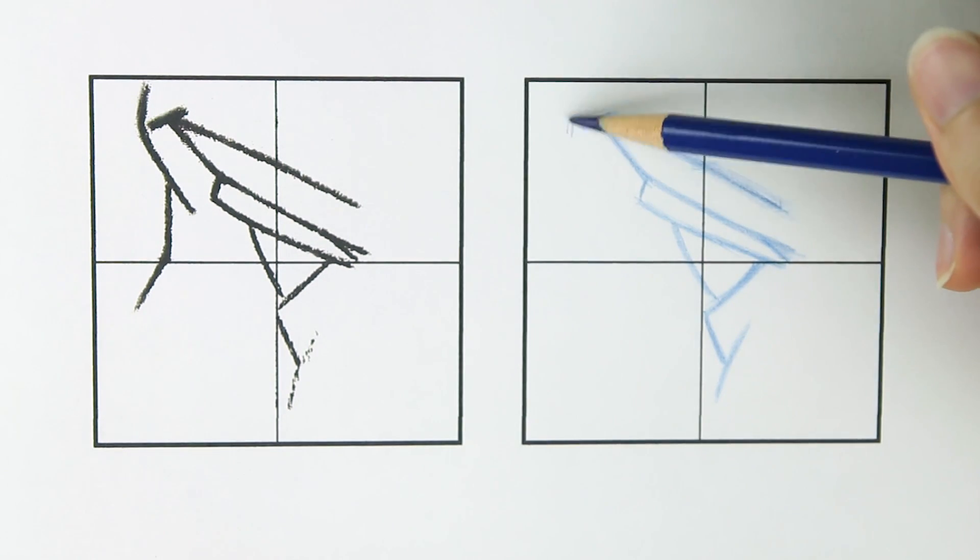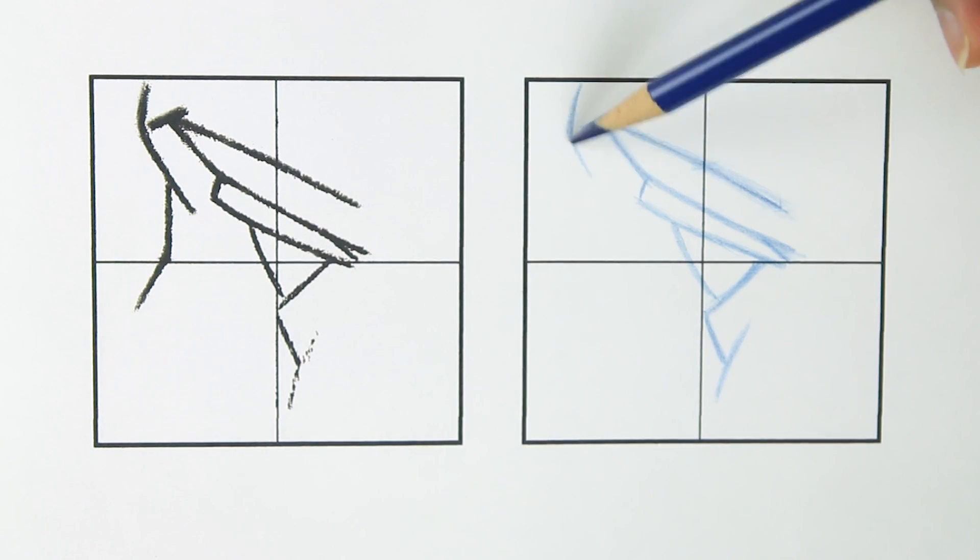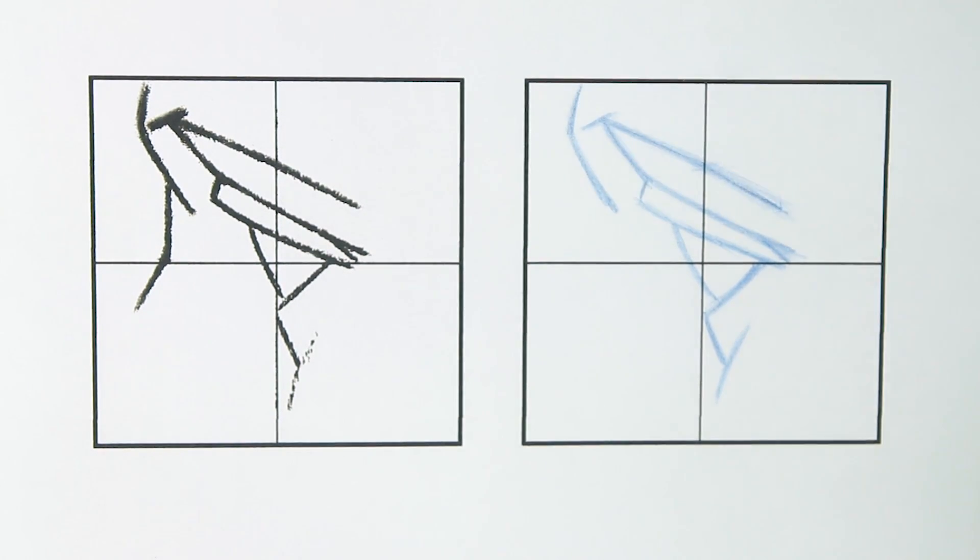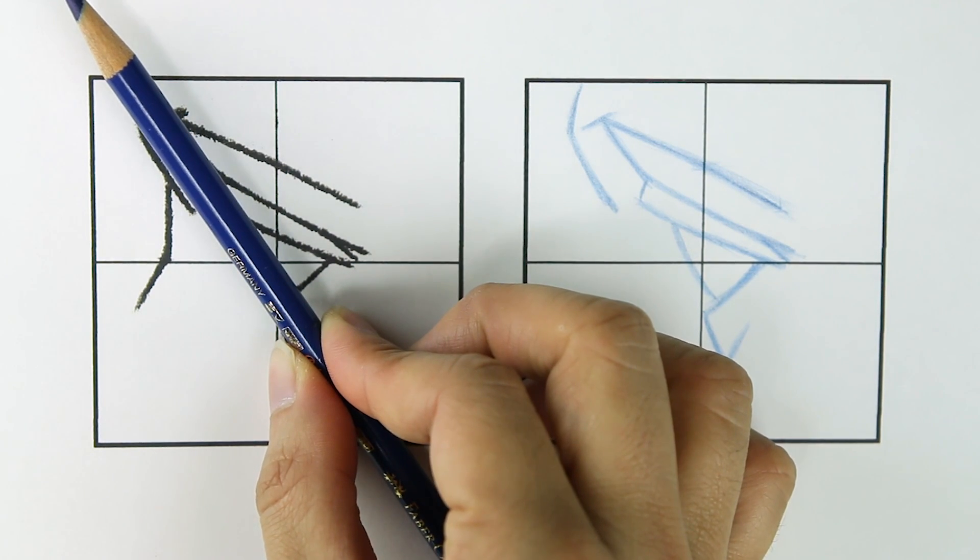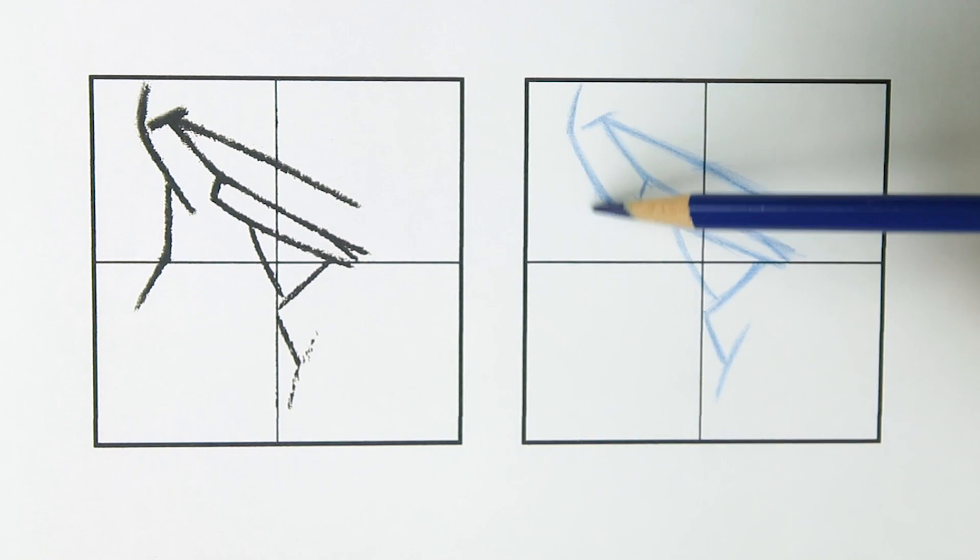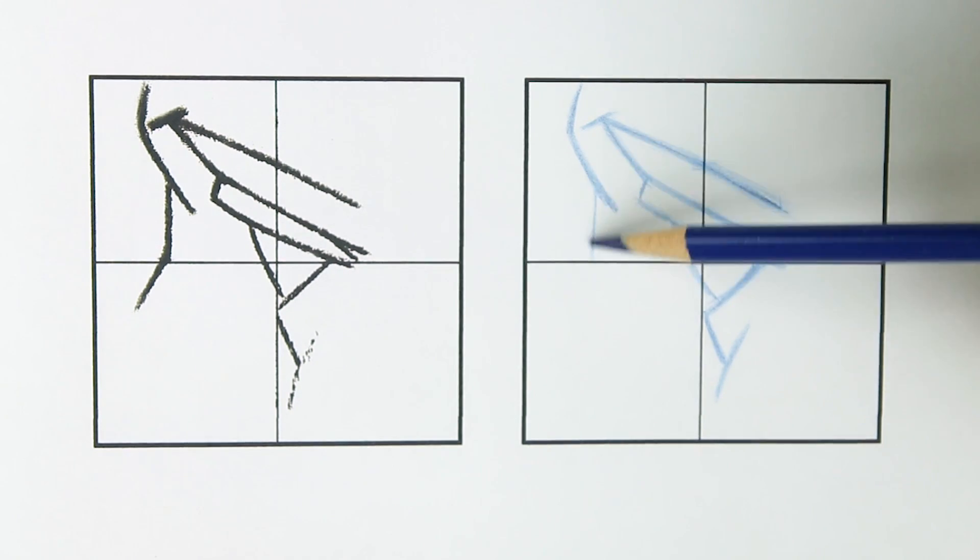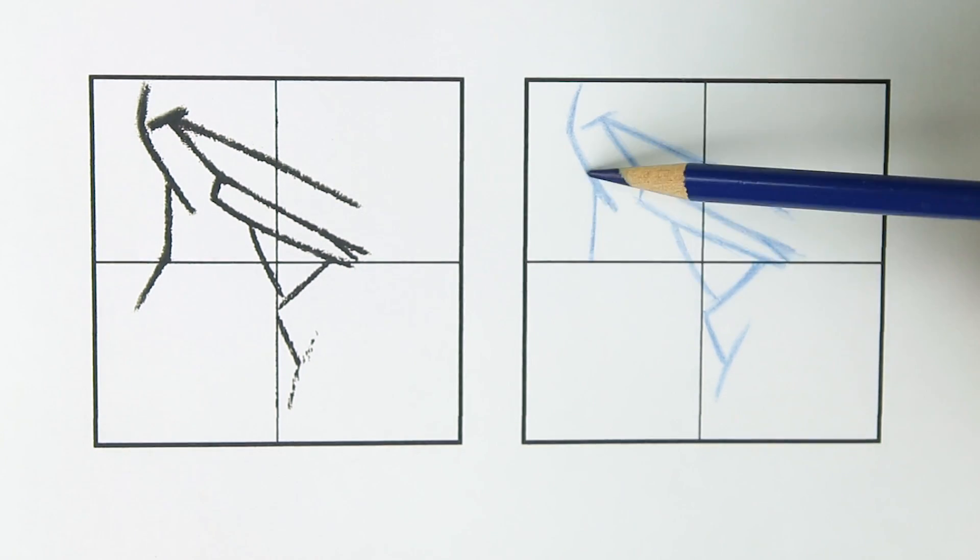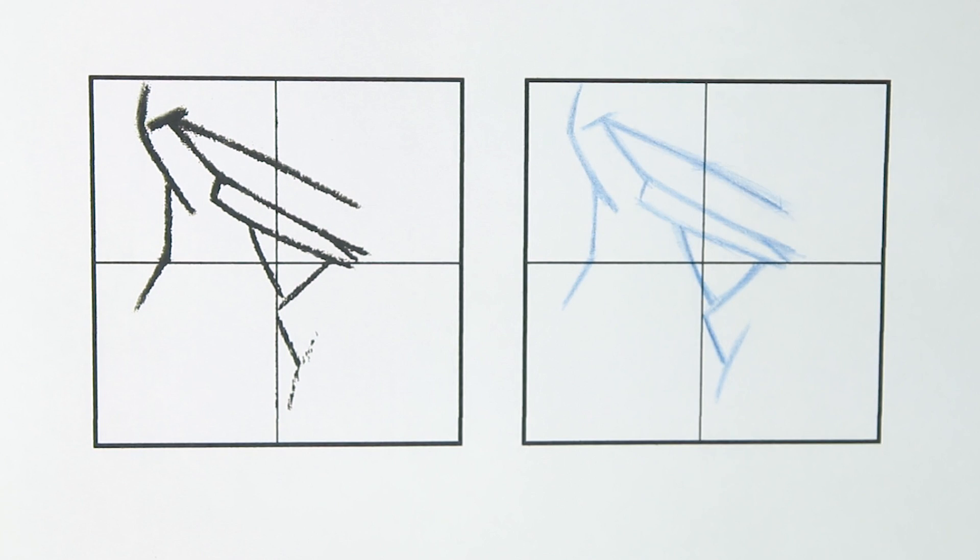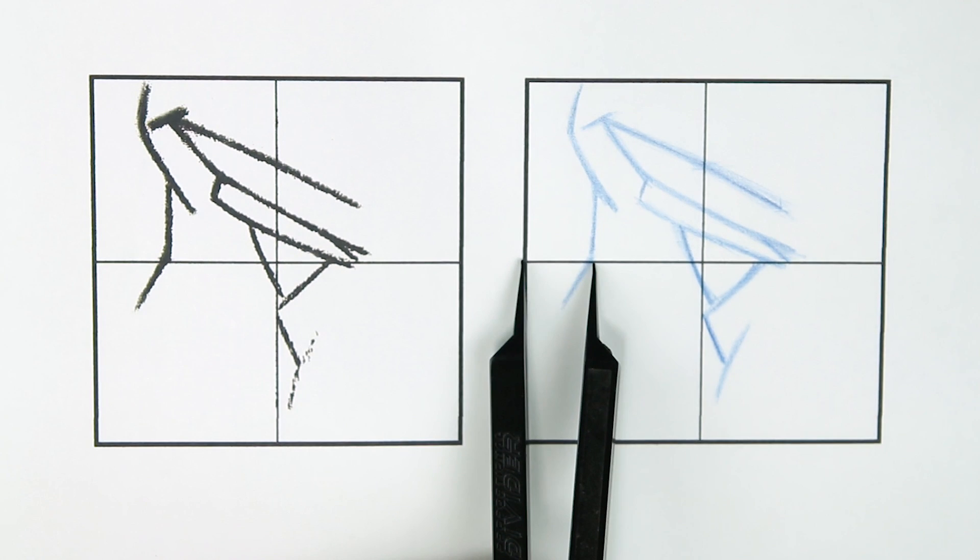Okay, lastly we'll use the same process to draw the brow ridge and nose. Now try to scrutinize the drawing with your eyes to see if you can spot any mistakes. And then use the tools to double check.